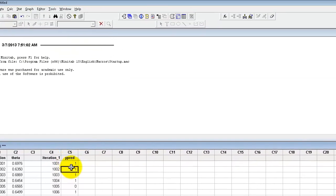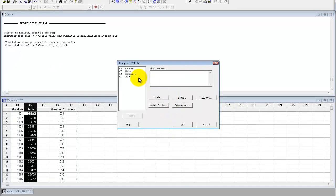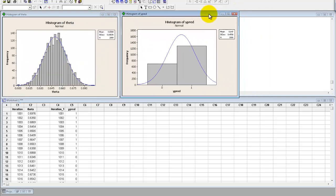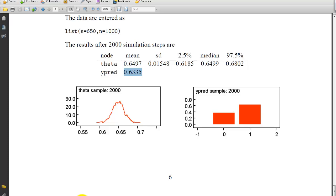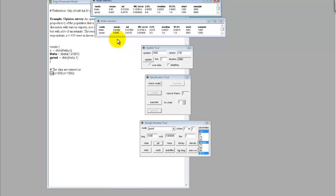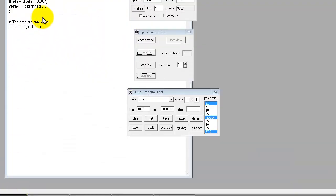And then I'll just do a distribution histogram. So here we have our Theta. Normal distribution. The mean is 0.6500. Get rid of these here. 0.6500. And then our y predict. 0.647. 0.647. So these come out to be as graphed.